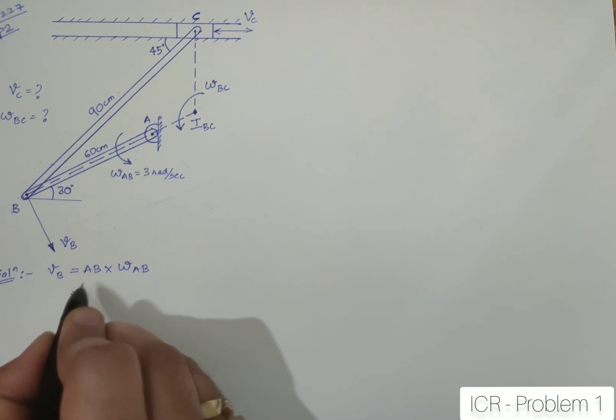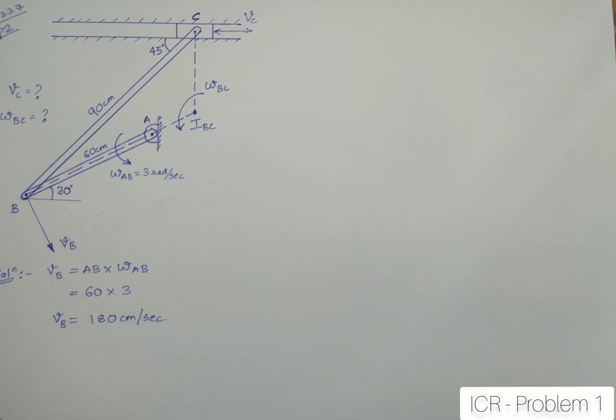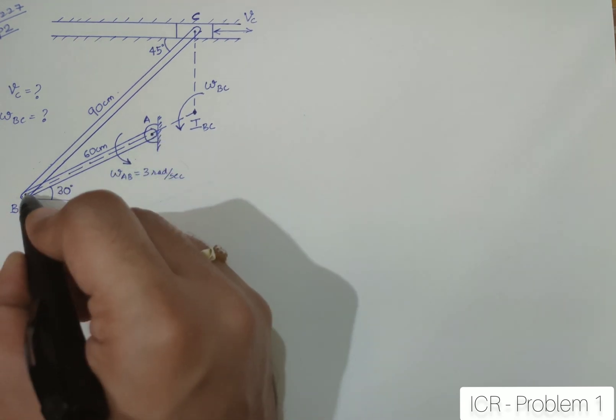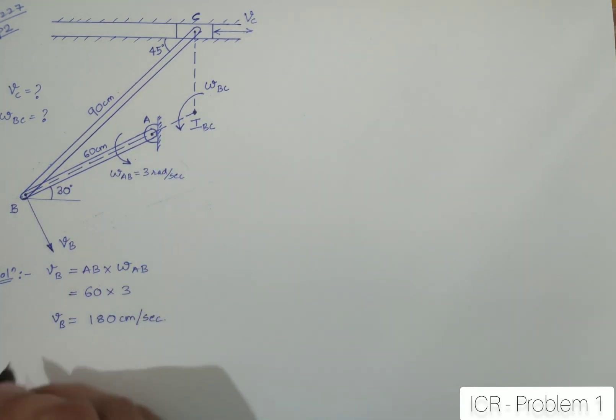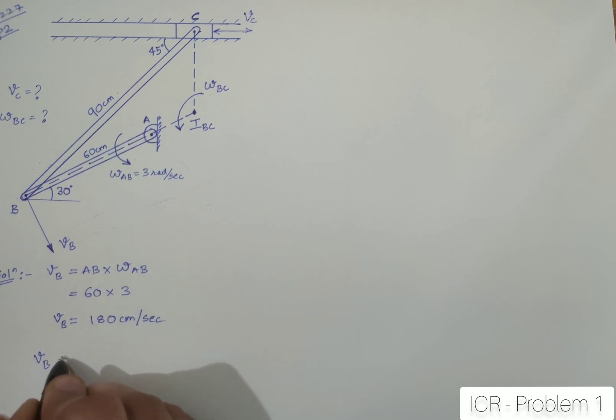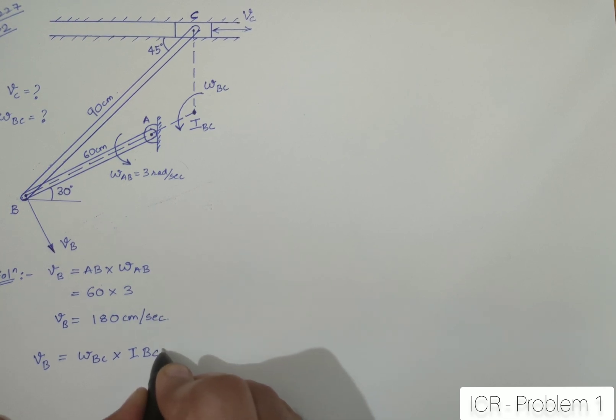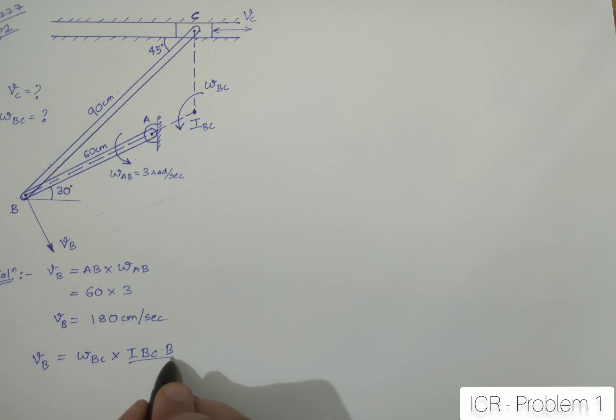I can say that VB will be equal to AB into omega AB. So here, AB is given as 60 centimeters into omega AB is given as 3. So this gives me 180 centimeters per second. Now, I also know that VB is just not the point on AB, it is also a point on BC. So VB shall also be having the velocity, VB shall also be related to omega BC. So VB can as well be written as omega BC into the distance IBC to B.